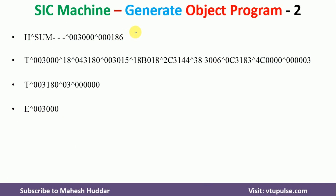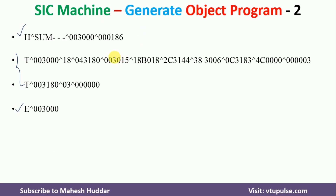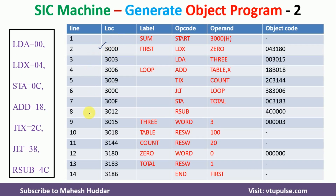Now we will start writing the object program. The object program has its own format — it has one header record (H) and one end record (E), with multiple text records (T) in between. The header record has 19 columns: column 1 is H, columns 2–7 are the program name, followed by the starting address and the length of the program. Here: H, the name is SUM, starting address is 3000, and the length is 3186 minus 3000.